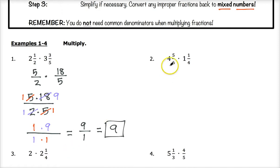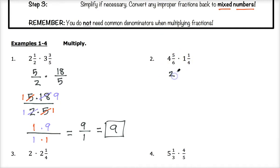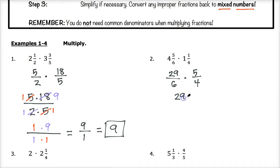Number two: we have four and five sixths times one and one fourth. Six times four is 24, plus five is 29, so this becomes 29 sixths as an improper fraction. One and one fourth becomes five fourths. So we have 29 times five over six times four.